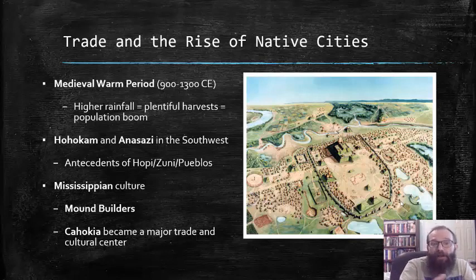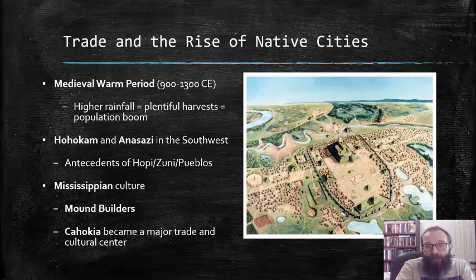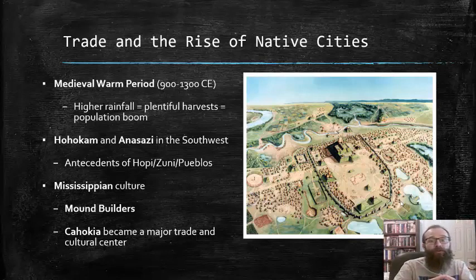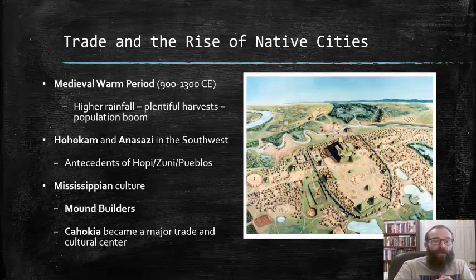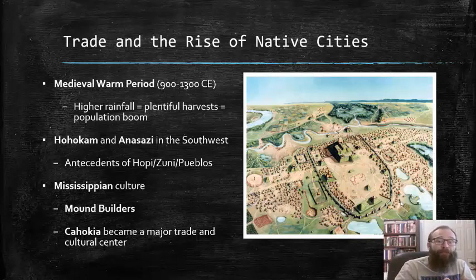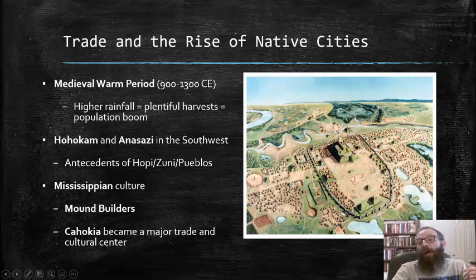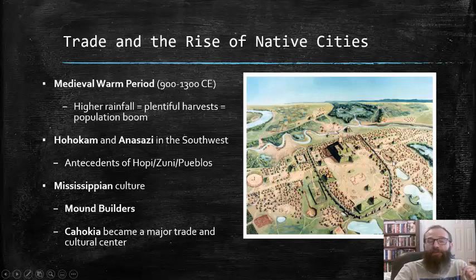You had the Hohokam and the Anasazi in the Southwest, which are the antecedents of the Hopi, the Zuni, and the Pueblo peoples. You had the Mississippian culture along the Mississippi River Valley, also known as the Mound Builders, particularly known for building large earthen mounds used for ceremonial purposes and perhaps as dwelling places as well. Cahokia, a large city along the Mississippi River Valley, became a major trade and cultural center, shown here in an artist's rendering based on the most recent archaeological evidence.